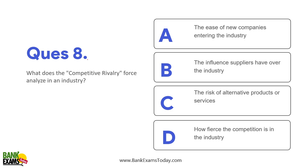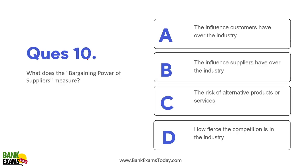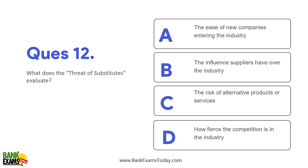What does competitive rivalry force analyze in an industry? It analyzes how fierce the competition is. Which force examines how easy it is for new companies to enter the industry? Threat of new entrants. Bargaining power of suppliers measures the influence suppliers have over the industry. Bargaining power of buyers addresses the influence customers have. Threat of substitutes is the risk of alternative products or services.